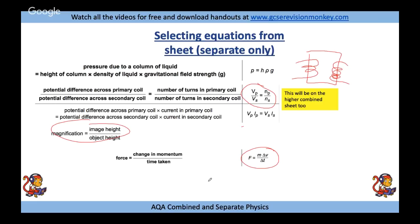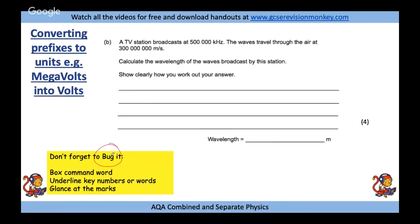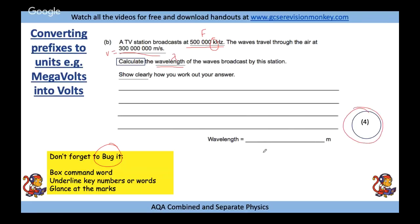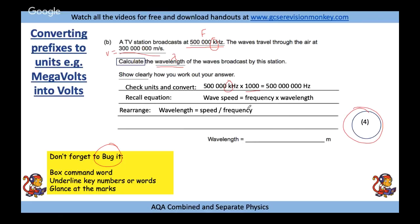For exam technique: 'BUG' your exam questions — box the command word, underline key values, and highlight units you need to convert. Look at the number of marks to gauge how much work is needed. Check and convert units — for example, kilo means a thousand. Recall the equation, rearrange it, substitute in the values, and calculate the answer.